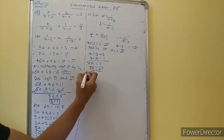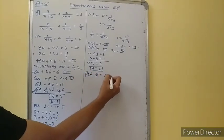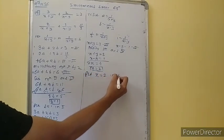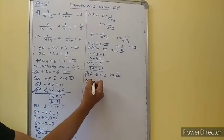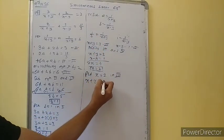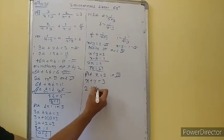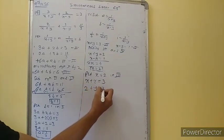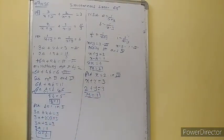Put x equal to 2 in equation number 3. What is the third equation? We have x plus y is equal to 3. So 2 plus y is equal to 3; y is equal to 3 minus 2, which is 1. So we have the value of x and we have the value of y.